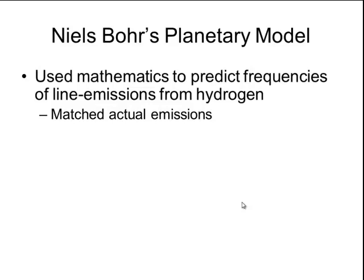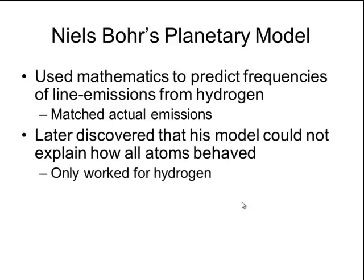Using this planetary model of an atom, Niels Bohr was able to use mathematics to predict the frequencies of the line emissions. So he did a series of calculations to predict what frequencies should be given off by hydrogen, and that actually matched the exact frequencies observed by Balmer, Lyman, and Paschen. However, later discoveries showed that his model could not explain how all atoms behaved, and it only worked for hydrogen.